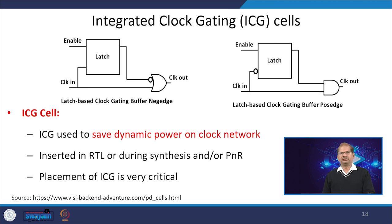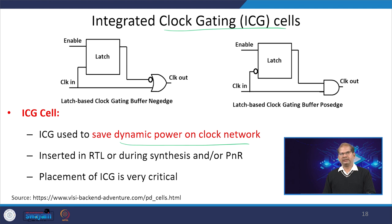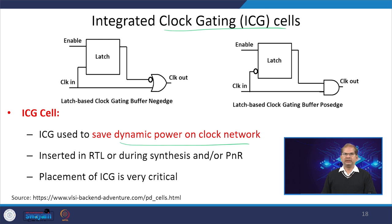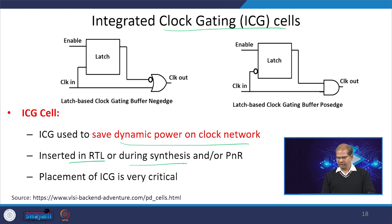Another category is the integrated clock gating cell (ICG), used to save dynamic power on the clock network. Whenever a module is not doing any work, we can switch off the clock going to that module. During that time the clock will not reach the circuit, making the frequency component of dynamic power zero, thus reducing dynamic power dissipation. The ICG cell is inserted in the RTL during synthesis or in the place-and-route phase, and its placement is very critical for proper clock gating.